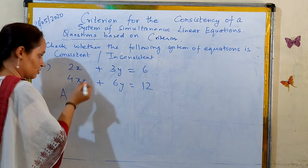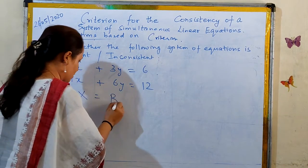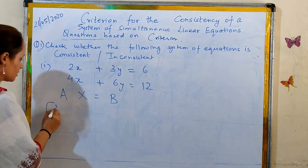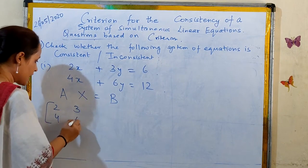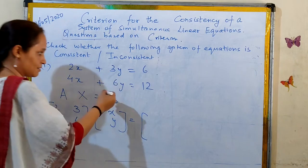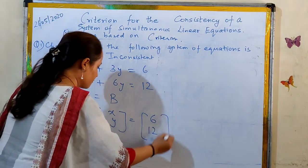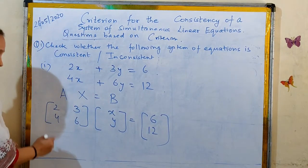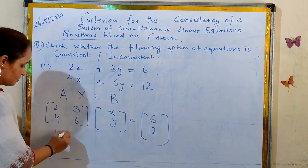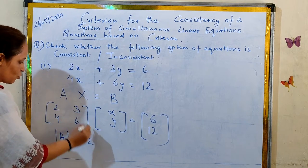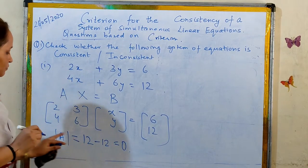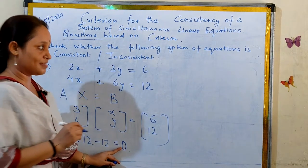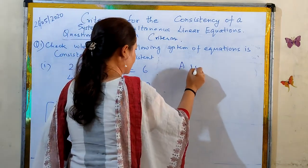First, we write the equations in matrix form as Ax = B. Here, A is the coefficient matrix containing all the coefficients, X is the matrix containing all the unknowns x and y, and B is the matrix containing the constants. We find the determinant of matrix A: 2 into 6 equals 12, minus 4 into 3 equals 12, so the determinant is 0. This means A is a singular matrix.